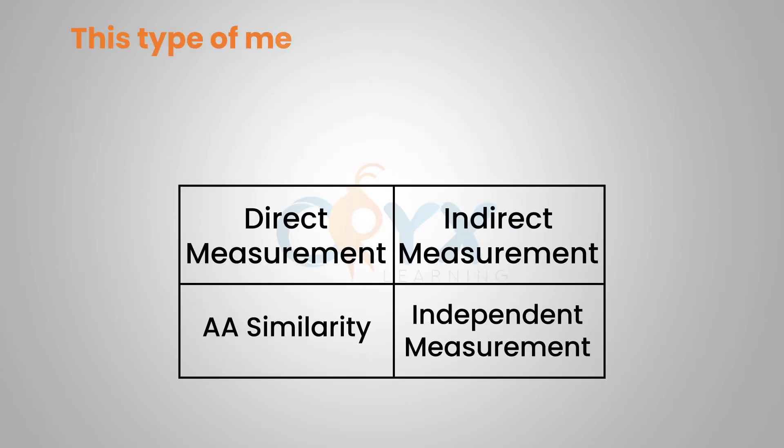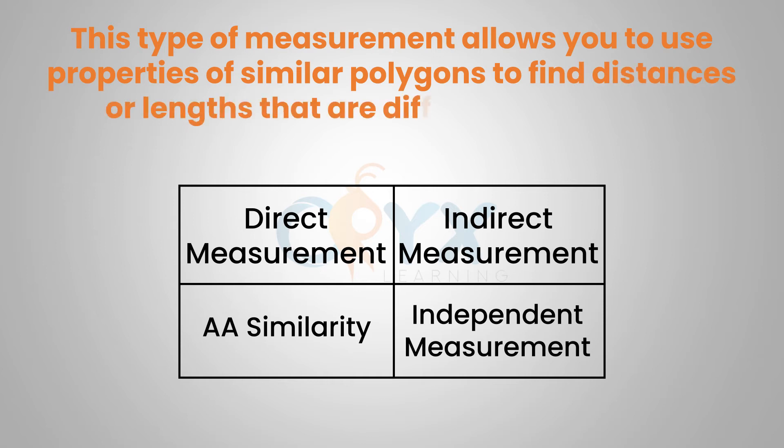This type of measurement allows you to use properties of similar polygons to find distances or lengths that are difficult to measure. As mentioned in the last slide, this is called indirect measurement.